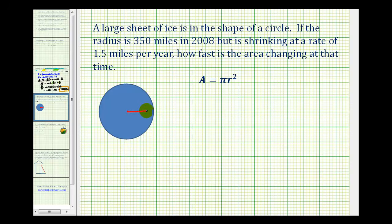So this is the radius of our circle. We're concerned about the rate of change of the area when r is equal to 350 miles, and also when the radius is shrinking at a rate of 1.5 miles per year. So the radius is getting smaller.